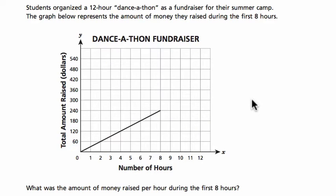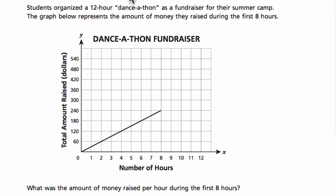Hello and welcome. Let's start by reading this question together. It says, students organized a 12-hour dance-a-thon as a fundraiser for the summer camp. In the graph below, it represents the amount of money they raised during the first eight hours. They want to know, what was the amount of money raised per hour during the first eight hours?